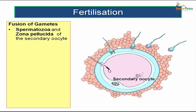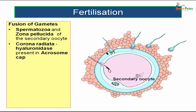Now it is time for the fusion of gametes — the spermatozoa and the zona pellucida of the secondary oocyte. At the time of ovulation, we have the secondary oocyte and the first polar body. The spermatozoa fuses with the zona pellucida covering the secondary oocyte. To do so, the corona radiata must first be removed, which is made possible by hyaluronidase, an enzyme present in the acrosome of the sperm. The hyaluronidase released from the acrosomal cap removes the corona radiata, allowing the sperm to penetrate and reach the zona pellucida.